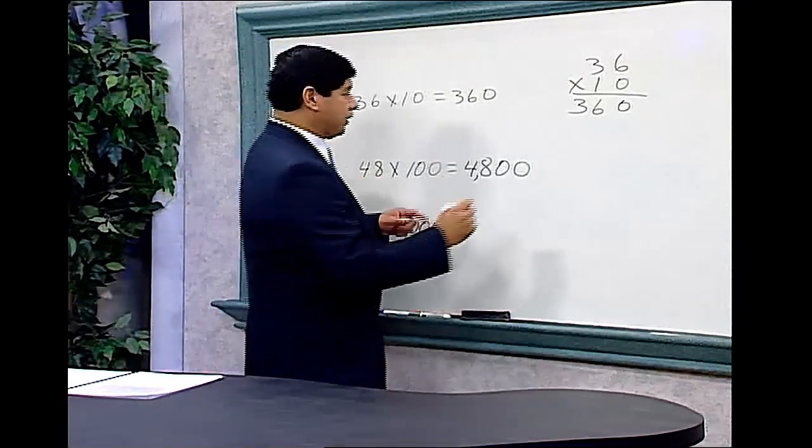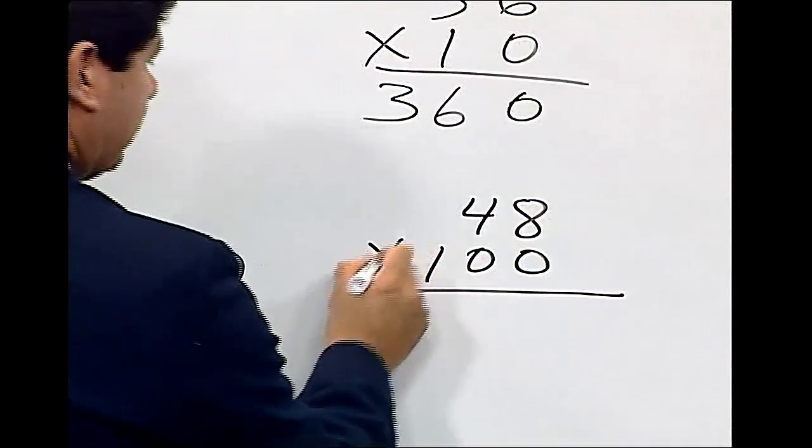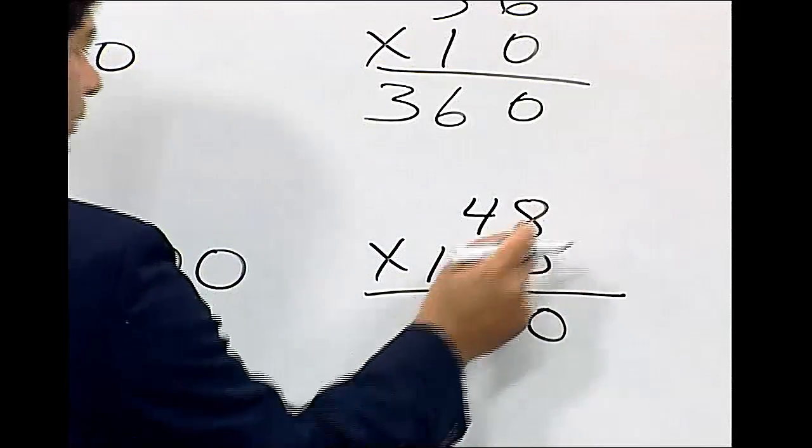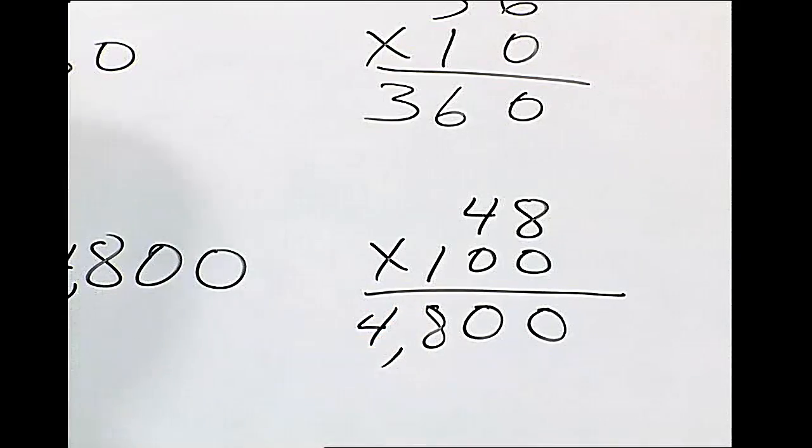And we can again demonstrate that as 48 times 100. Let's drop our two 0s. 1 times 8 is 8. 1 times 4 is 4. 4,800.